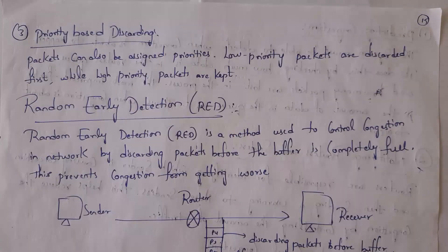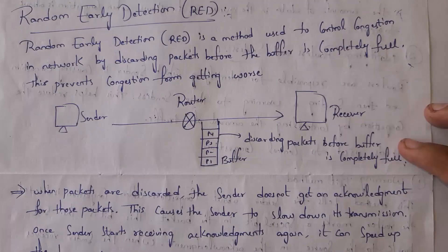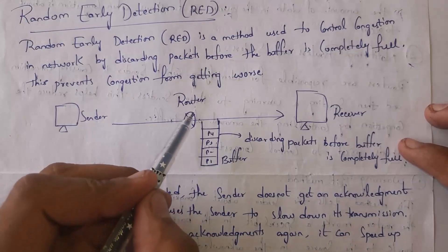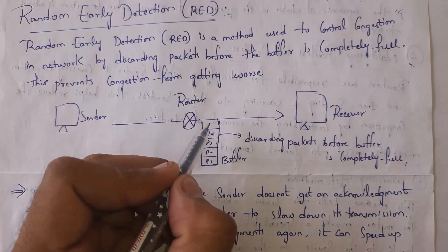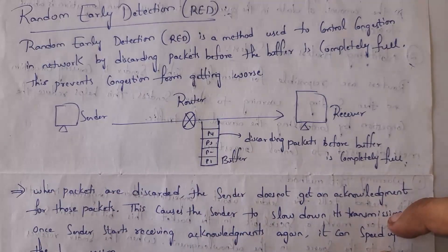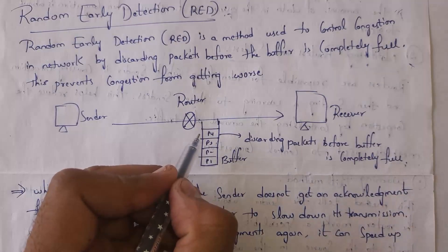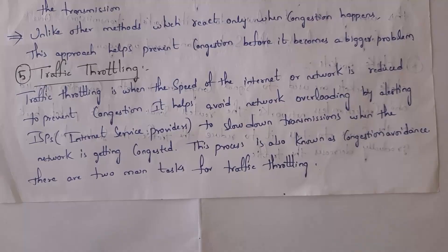You also need to know about RED — Random Early Detection technique. The RED technique controls congestion by discarding packets before the buffer is completely full, which prevents congestion. For example, if the router buffer size is 5, normally packets would be discarded only when the buffer is full, but with the RED technique, packets are discarded before the buffer is full — for instance, when the buffer size reaches 4 — so congestion will not occur.